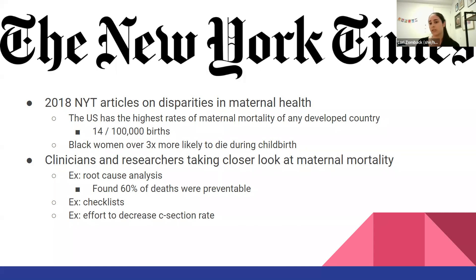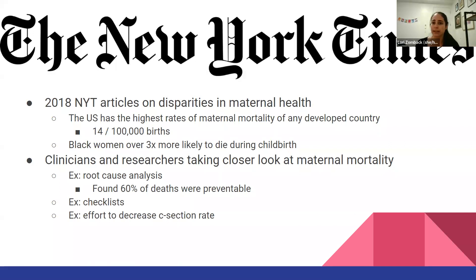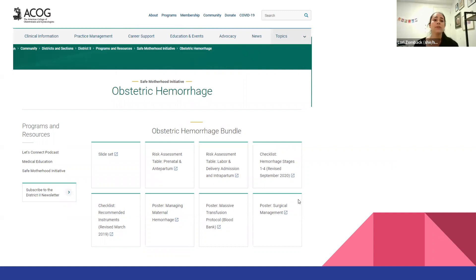They did things like increasing efforts to decrease C-section rates, implementing checklists — which are now found throughout many major hospitals — and doing a root cause analysis, which even found that up to 60% of maternal deaths were preventable. For example, when thinking about a maternal death from postpartum hemorrhage: it's not enough to just say there was postpartum hemorrhage. Now we need to ask why — was it because no one checked for uterine anatomy, or blood wasn't readily available, or there was no prenatal care and no one knew about placenta accreta? After all of this studying was done, the American College of Obstetrics and Gynecology now has a huge amount of information readily available about obstetric hemorrhages and how to prevent them.